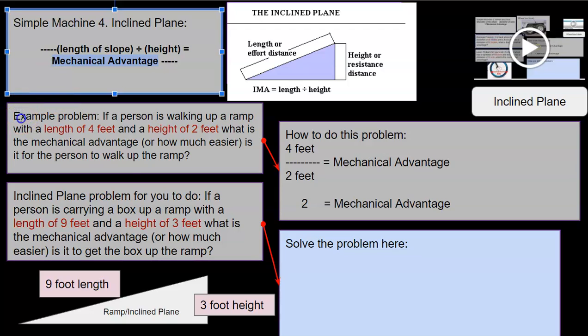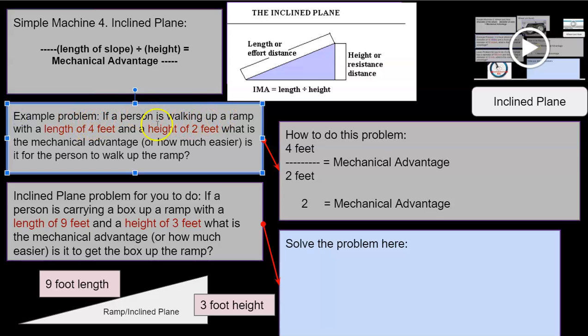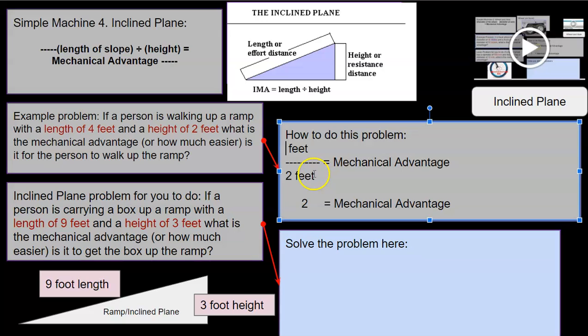Let's look at an example problem. If a person is walking up a ramp with a length of four feet and a height of two feet, you'll notice I use simple numbers, what is the mechanical advantage or how much easier is it for the person to walk up the ramp? Well, we just got how to do the problem right over here. We plugged in the four from over there, plugged in the two from over there. The feet are actually going to cancel out. Four divided by two is two. So that is our mechanical advantage.